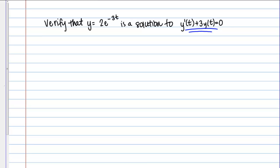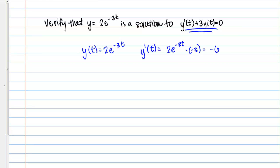To do that in this case, I'm going to need to know what y prime of t is, so let's go ahead and calculate that. I'm given y of t and I want to know y prime of t, which is just the derivative. I need to take the derivative of 2e to the negative 3t. The 2 is a constant, so it stays out front. The derivative of e to the negative 3t is e to the negative 3t times negative 3, so we end up with negative 6e to the negative 3t overall.